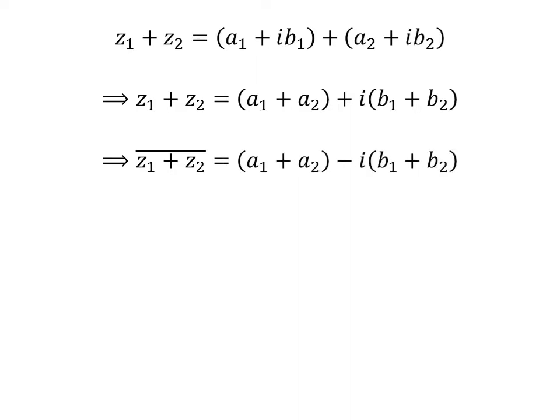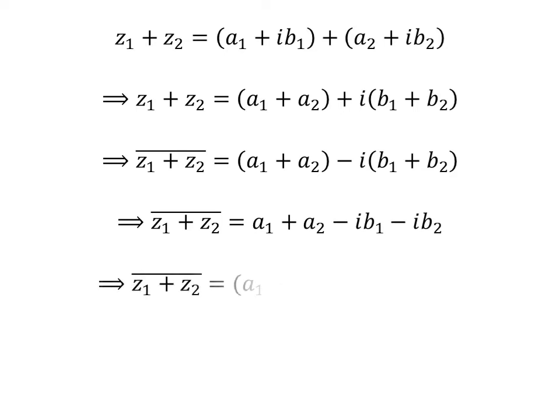So, the conjugate of z1 plus z2 is equal to a1 plus a2 minus i times b1 plus b2. The above statement can be rewritten as the conjugate of z1 plus z2 is equal to a1 minus i times b1 plus a2 minus i times b2.